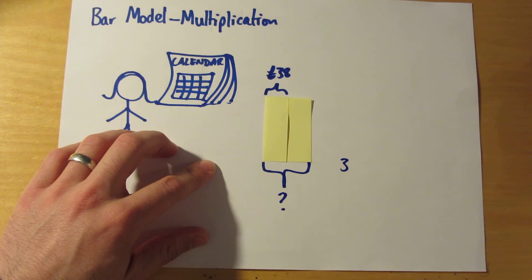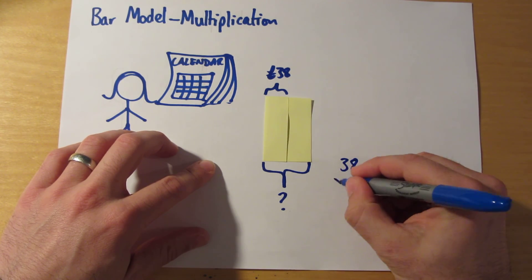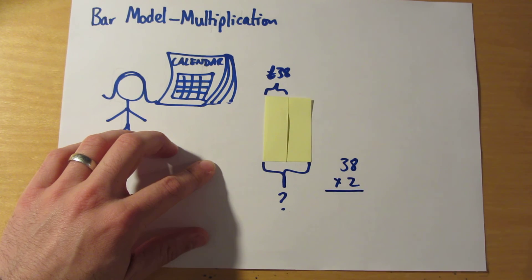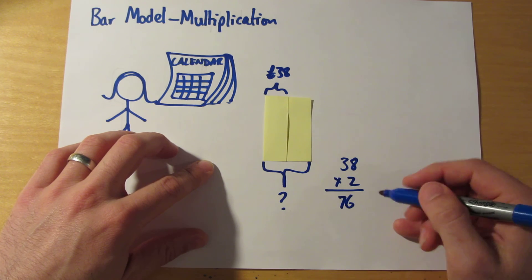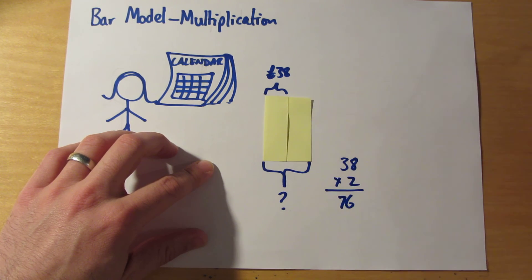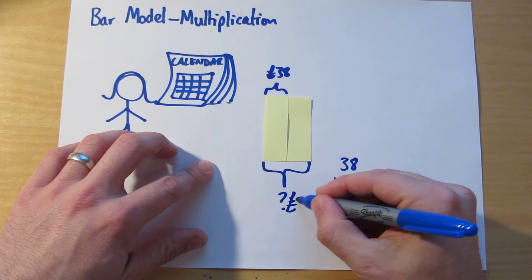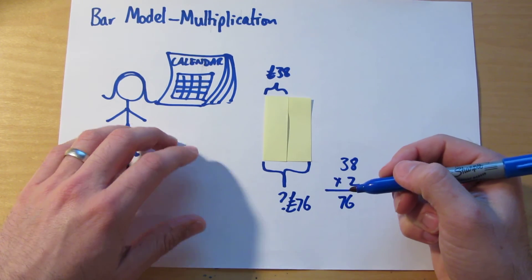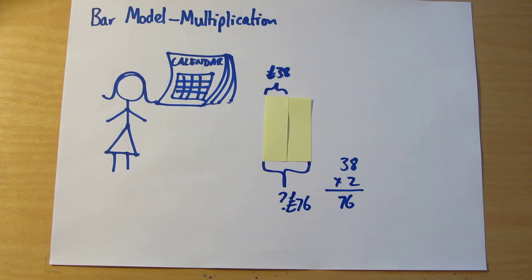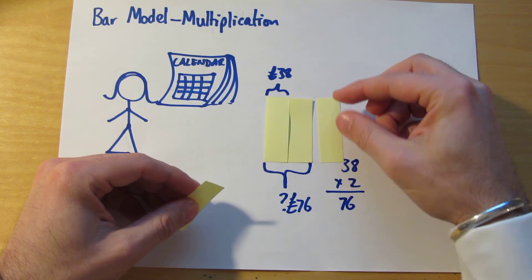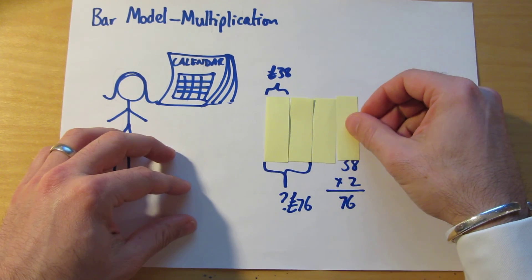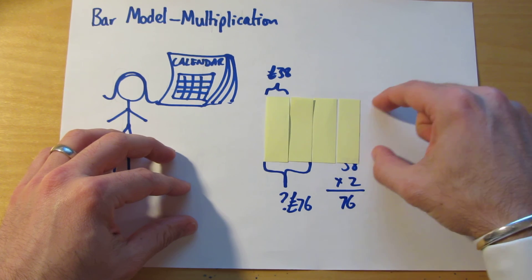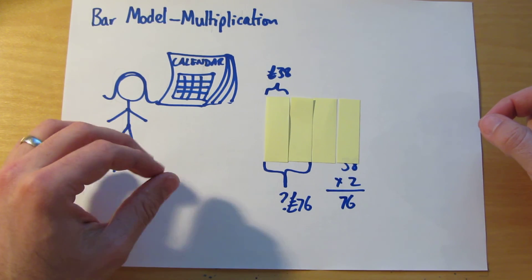We can work out the answer by doing 38 times two, which is 76. So in that case, she has £76 in her bank account once she takes the interest into account. So that was me doubling it, me timesing it by two. If I wanted to use the bar model to represent timesing it by three, I would have needed to copy that rectangle three times. If I wanted to times it by four, I'd need a fourth rectangle. And so on, depending on how many times I intend to multiply.